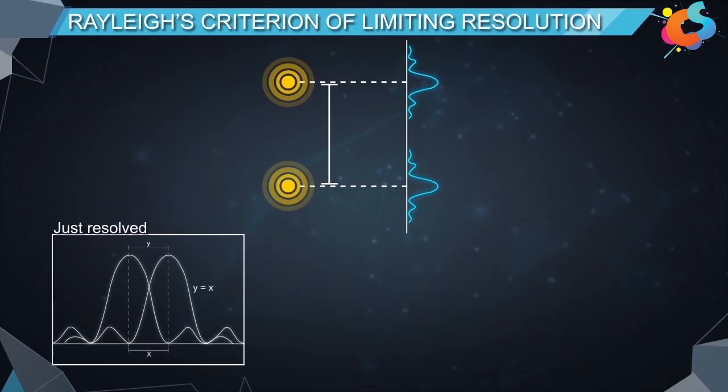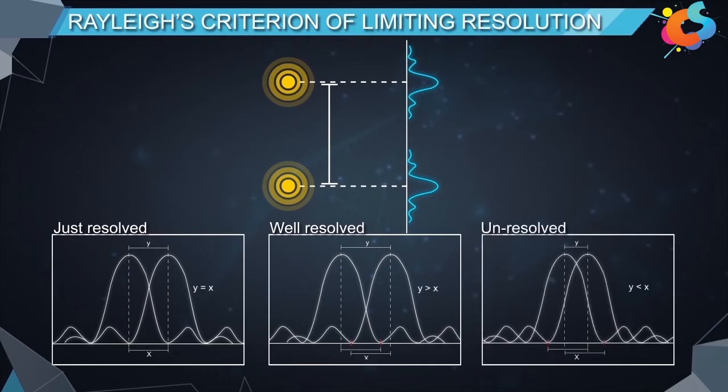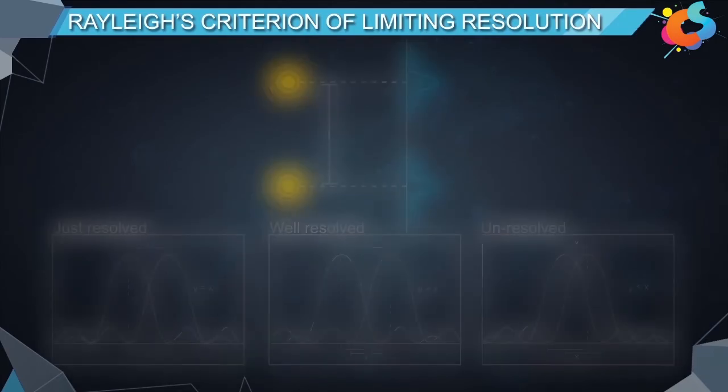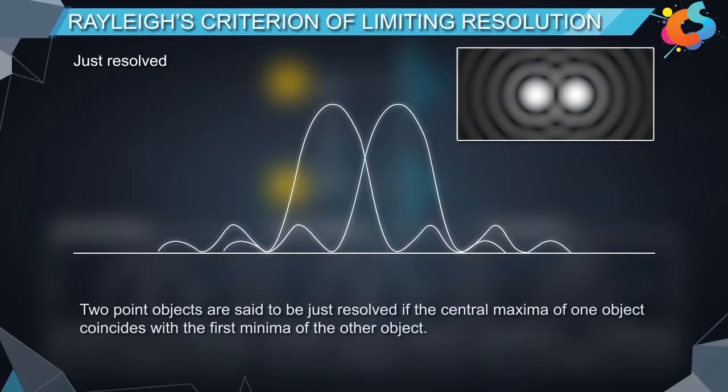The two objects may be just resolved, well resolved, or unresolved according to Rayleigh's criterion. First criteria: two point objects are said to be just resolved if the central maxima of one object coincides with the first minima of the other object.